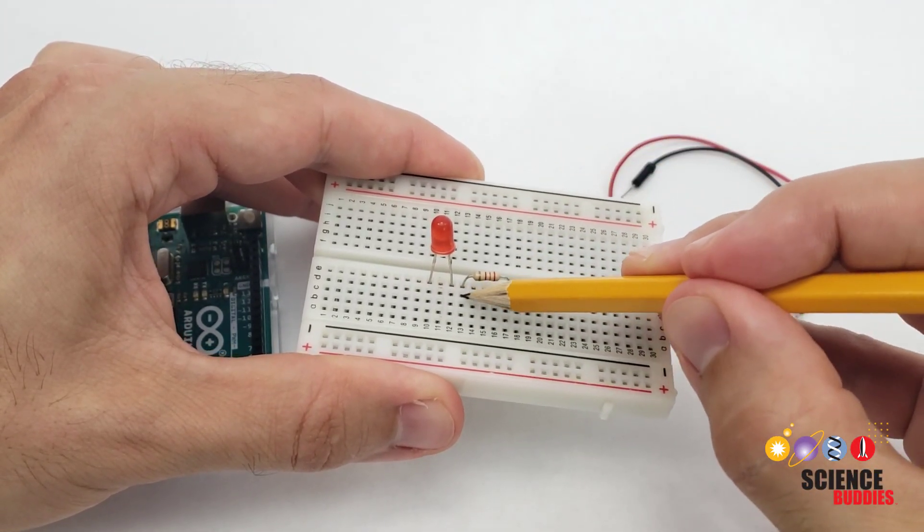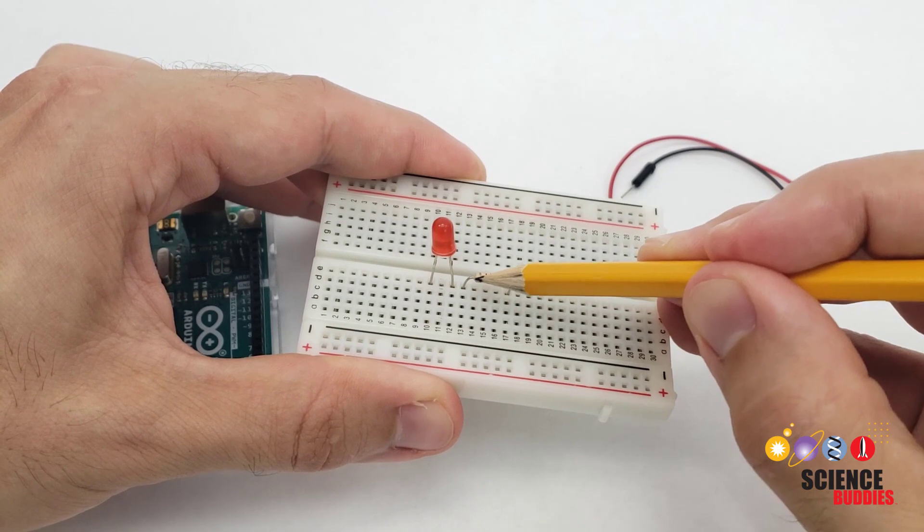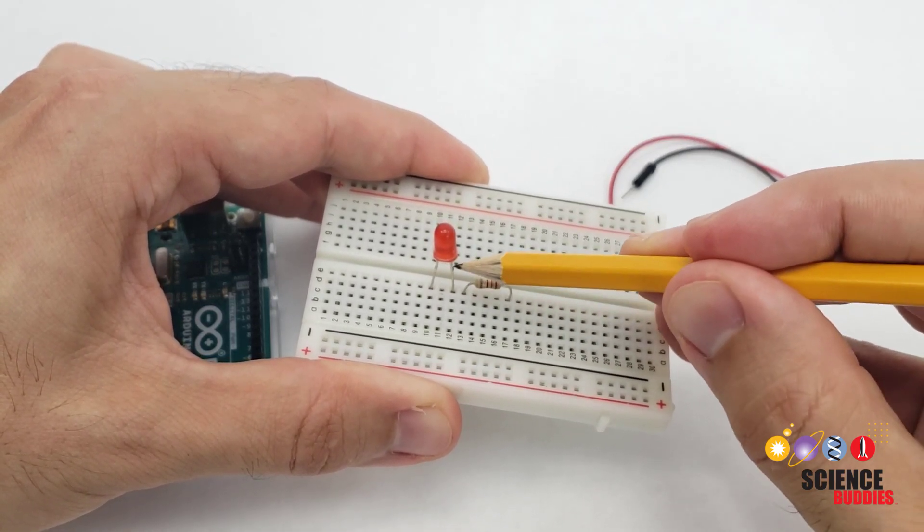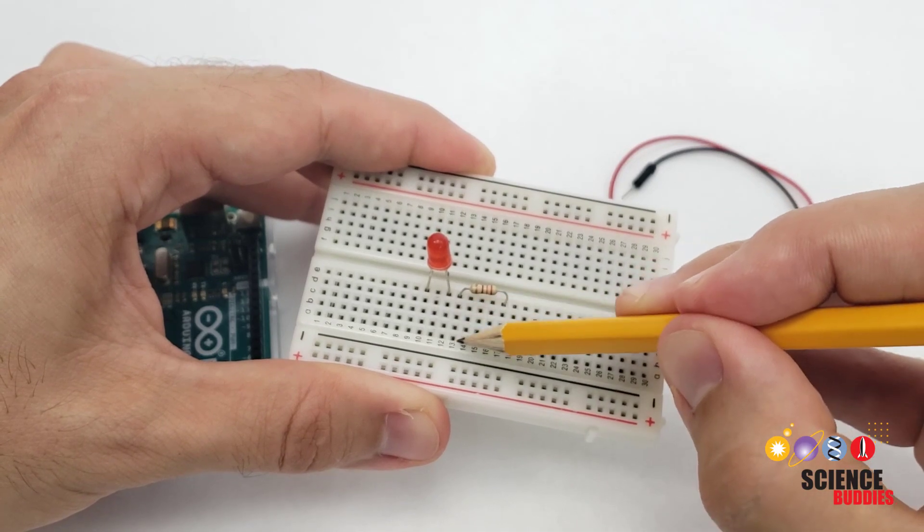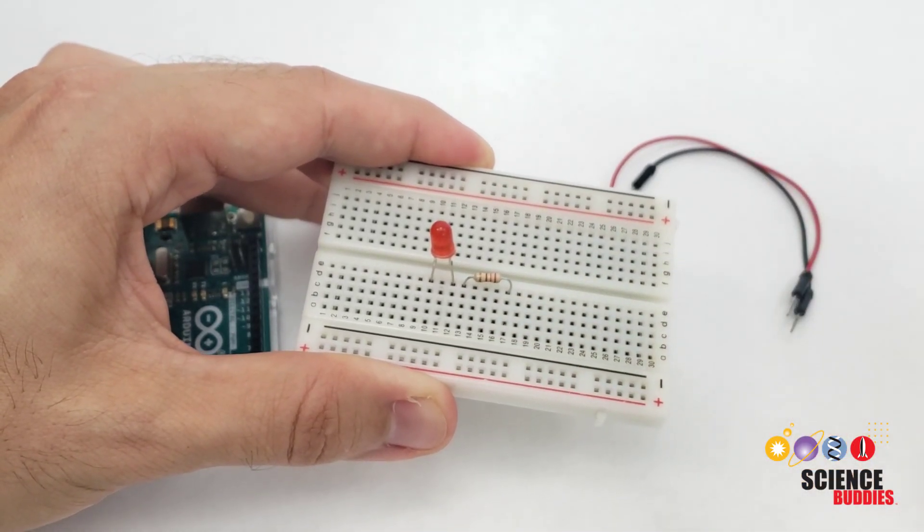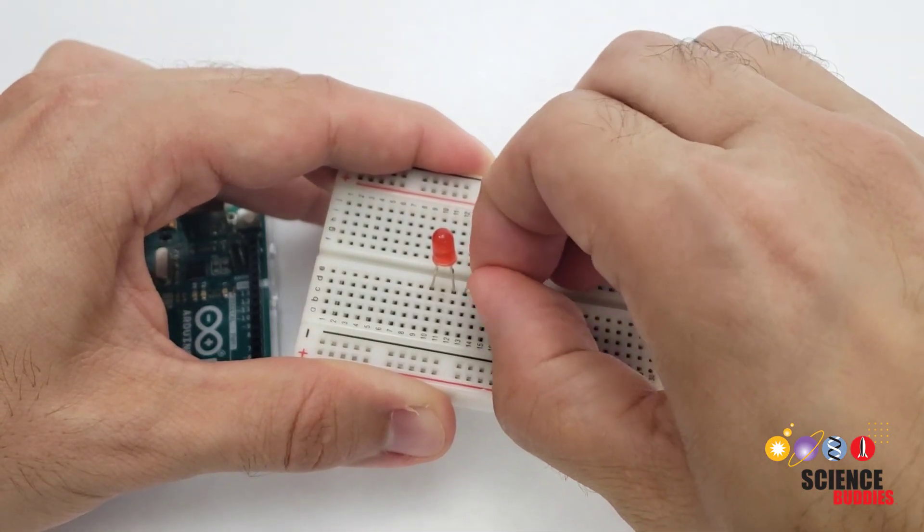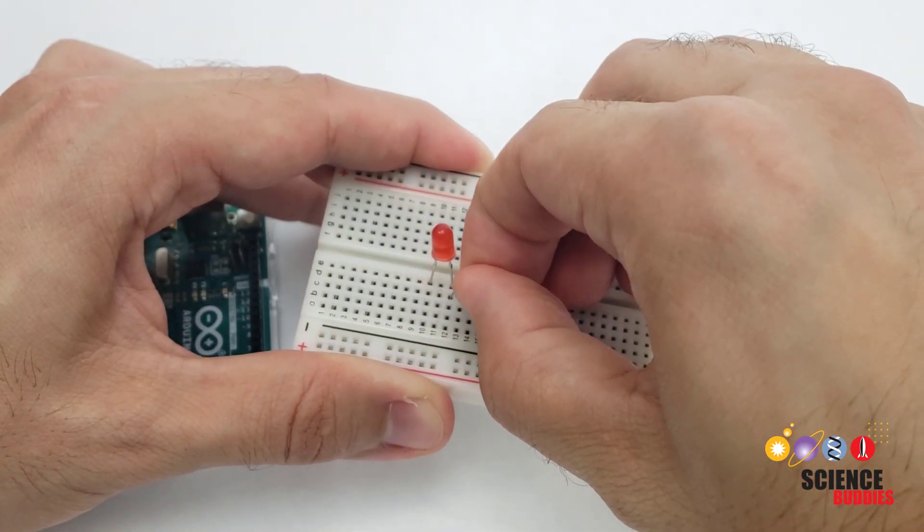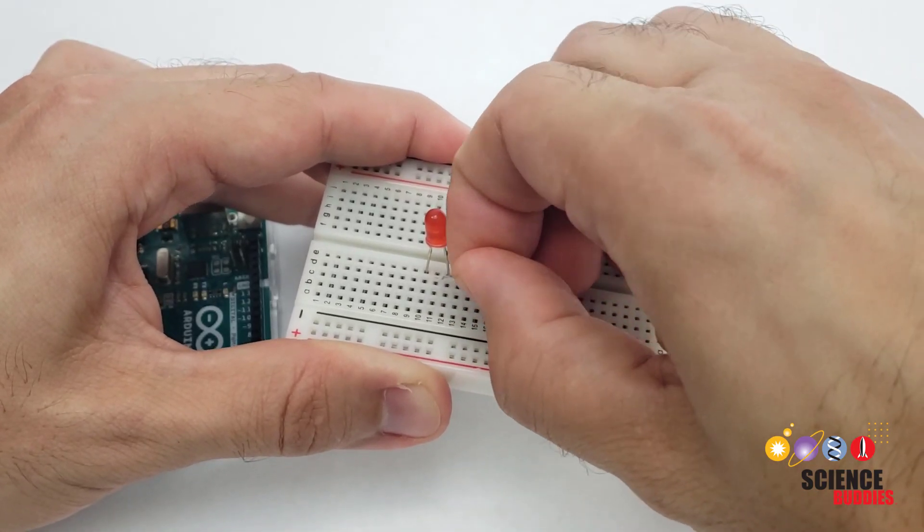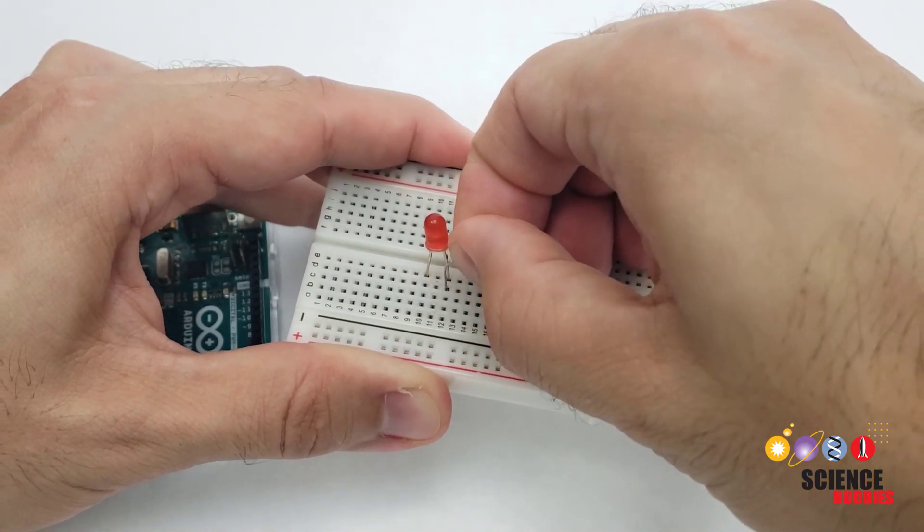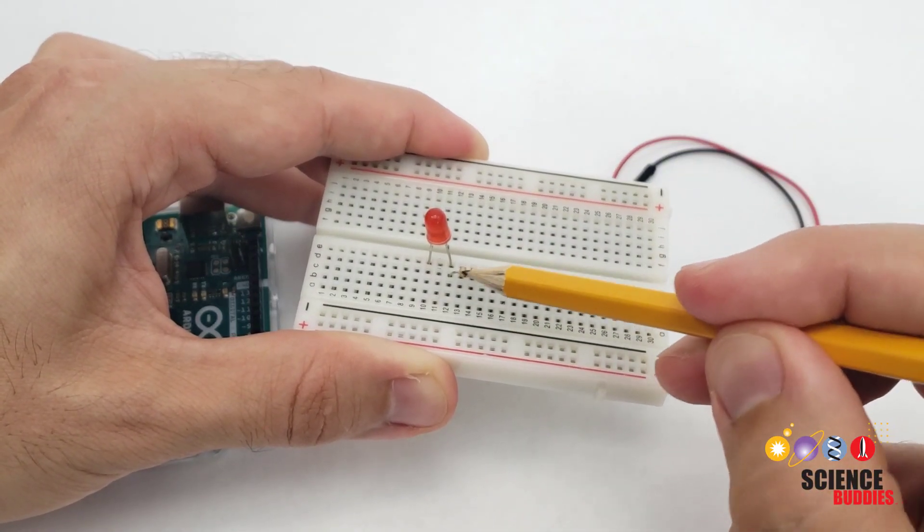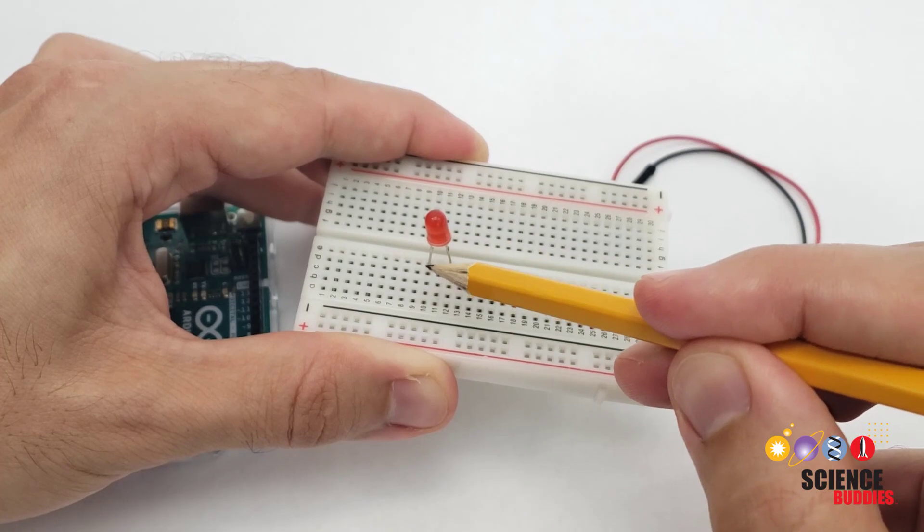Adjacent rows are not electrically connected to each other, so there is no path for electrical current to flow from the resistor into the LED here because row 13 is not connected to row 12. In order for the parts to be electrically connected or in series, I need to move the resistor over so one end of it is in row 12 next to the LED. Once I've done that, I now have a path for electrical current to flow through the resistor, then through the LED.